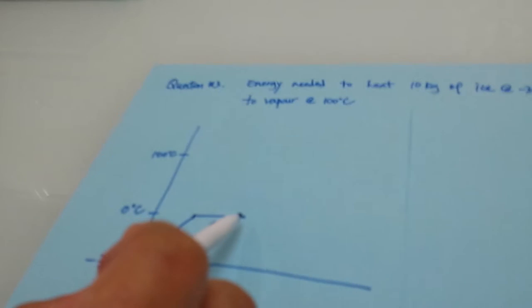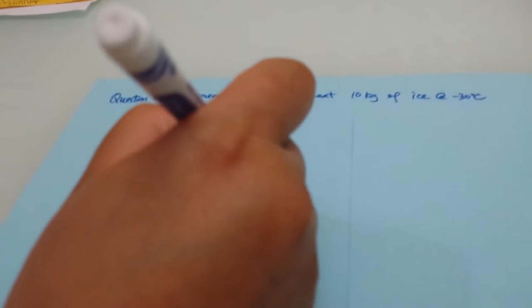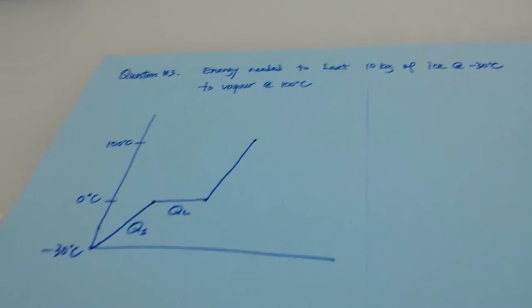After they all melt and turn into water, we have to add sensible heat to it again to heat the water up to 100 degrees Celsius.